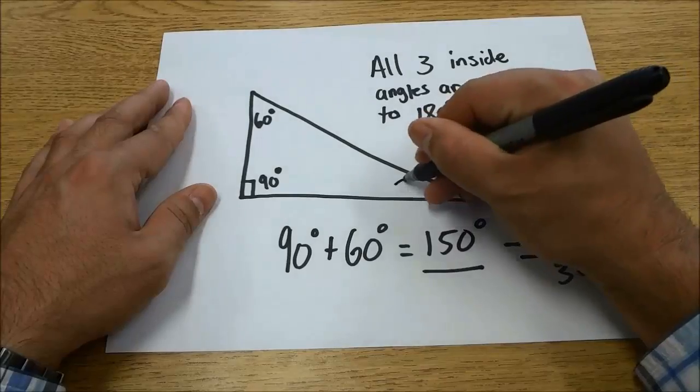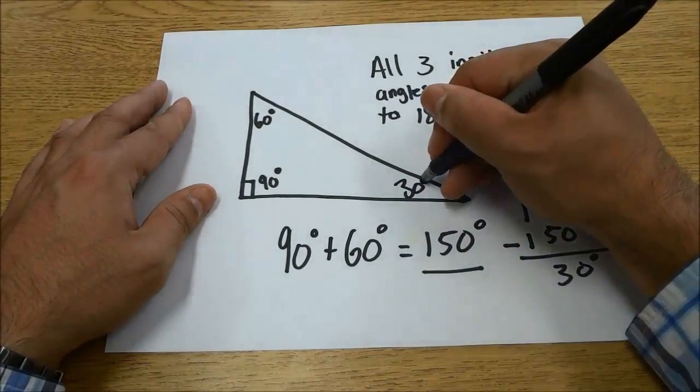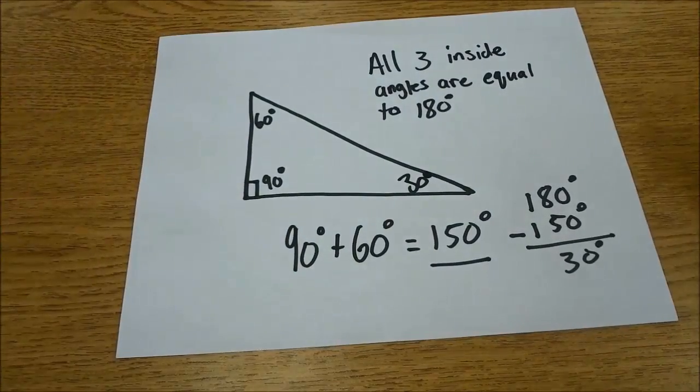This interior angle right here is 30 degrees. And that's basically how to find the missing angle of a triangle.